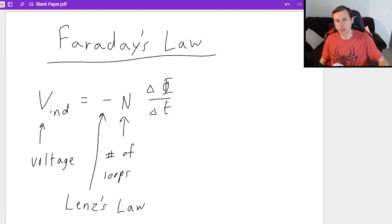And finally, change in flux over change in time. This is specifically the magnetic flux. And whenever I have delta notation, remember that it's really like flux final minus flux initial, and then same with time. It's like time final minus time initial. 99% of the time, time initial is going to be zero, so that's not a big deal.